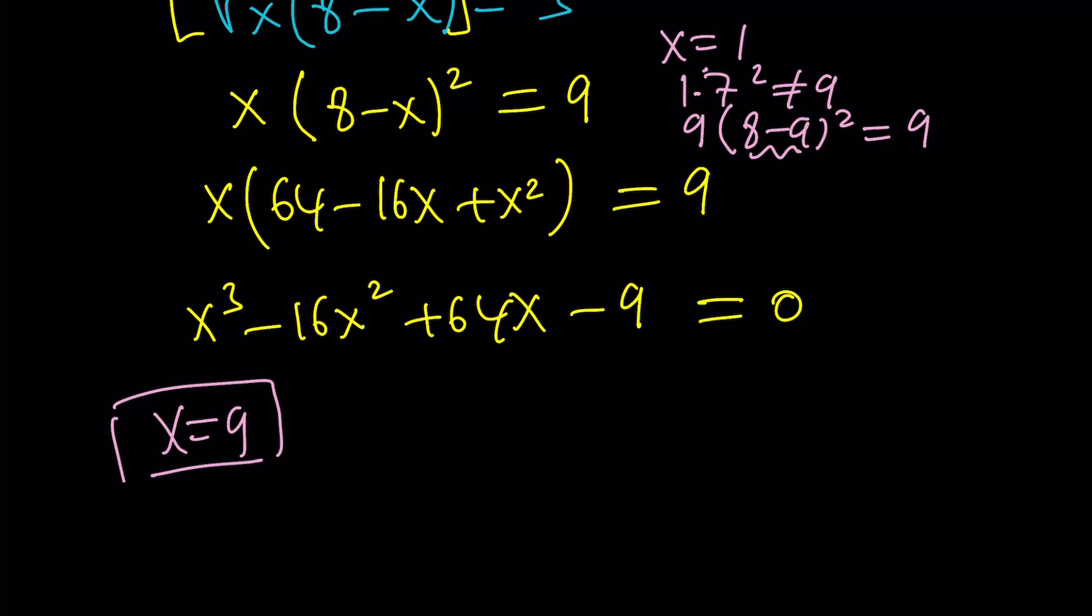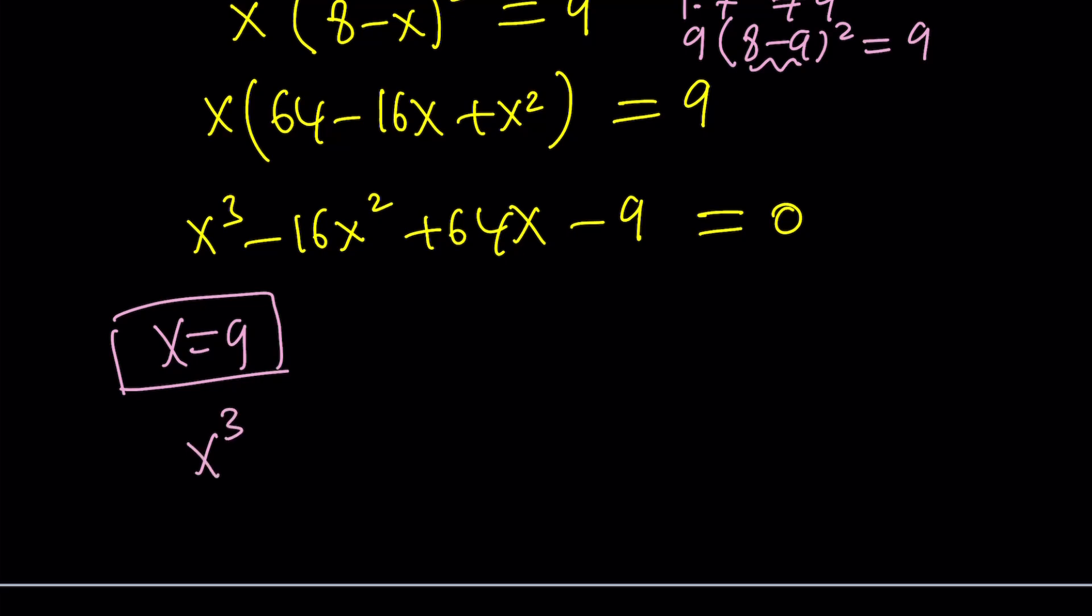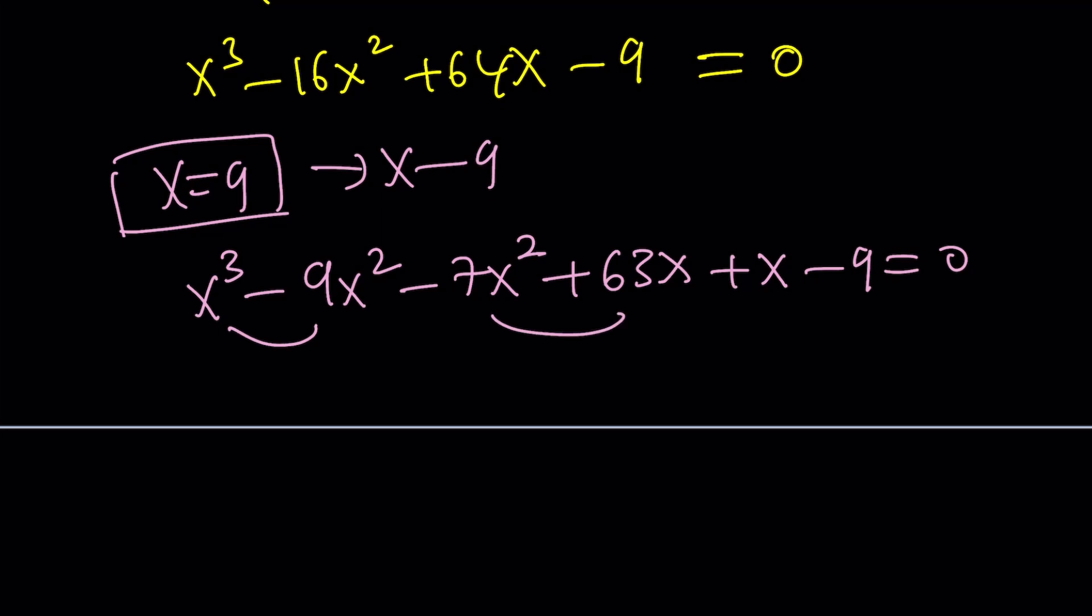So x equals 9 is a possible solution. What can I do with that? Well, knowing that x equals 9 works, we can divide this by x minus 9 using the factor theorem. Or we could just arrange these terms to make them divisible by x minus 9. We can write this as x cubed minus 9x squared, and then you would have to subtract 7x squared, followed by plus 63x. When you take out a negative 7x, it's going to be divisible by x minus 9.